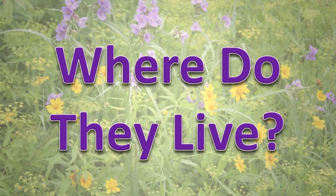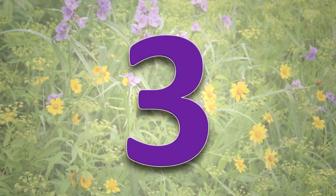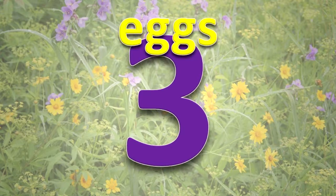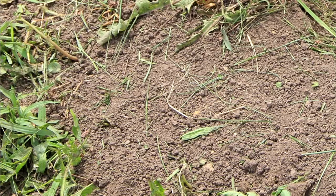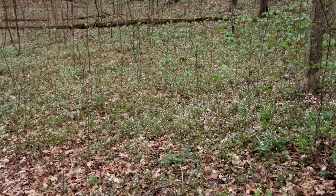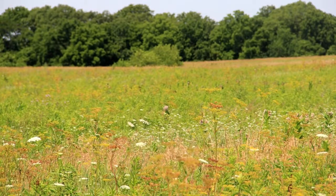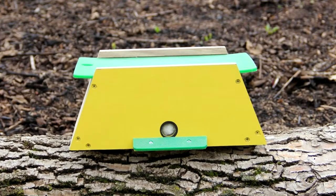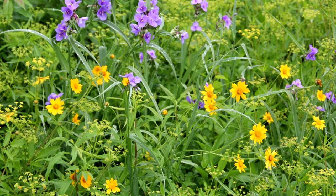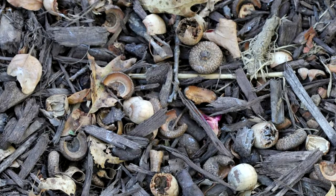Where do they live? Bumblebees need three different types of habitat in their life cycle. They must build a nest where their eggs, larvae, and pupae can develop safely. Bumblebees nest in the ground, among leaves on the ground, under tufts of grasses, or in piles of wood. They will also nest in nesting boxes made for them by humans, in baskets, and in other items they can find. They must live where many native wildflowers grow, so they can gather food from spring through fall. Bumblebee queens also need a place to survive the winter, such as in mulch or rotting logs.